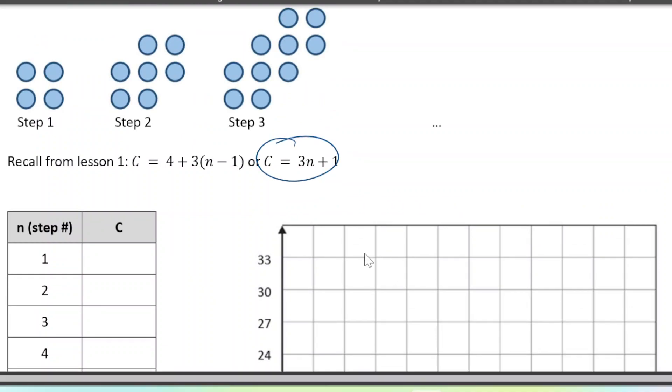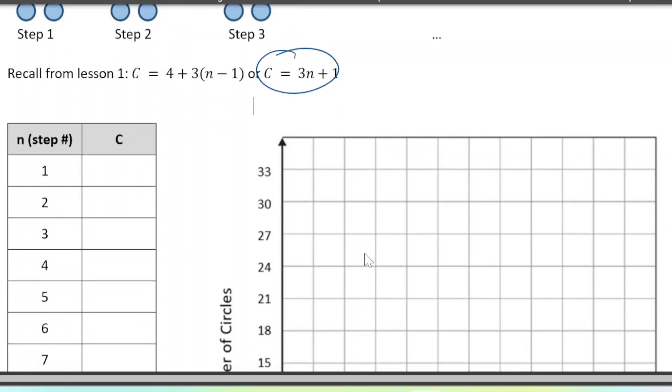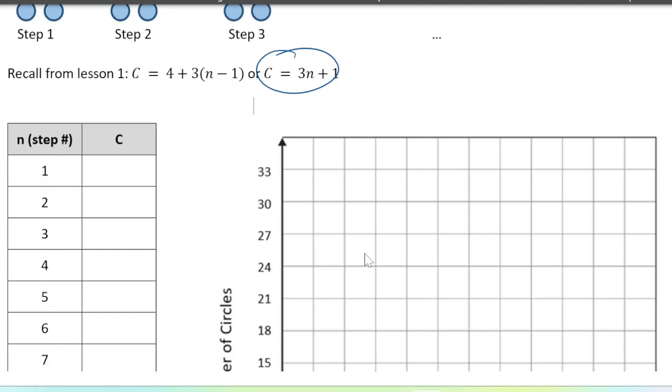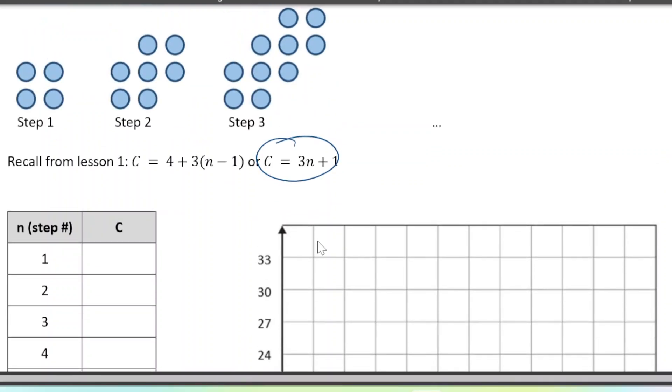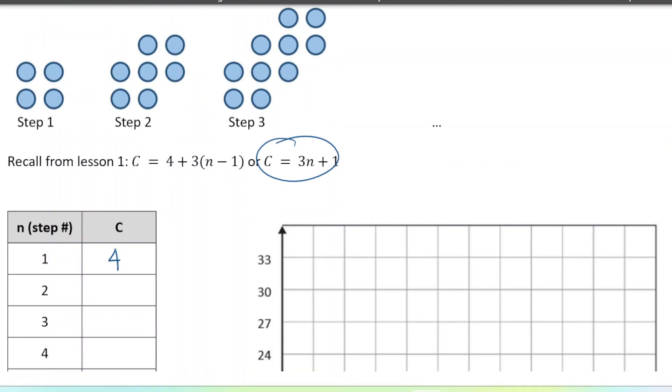When we make a table, we like to start with the step number on the left. So I just use the numbers one through 10, and then we're going to write how many circles are in each step. In step one, we've got four circles. In step two, I've got seven circles. In step three, I've got 10 circles.